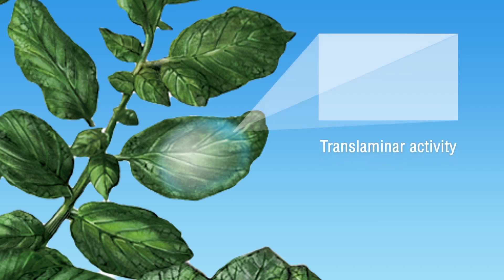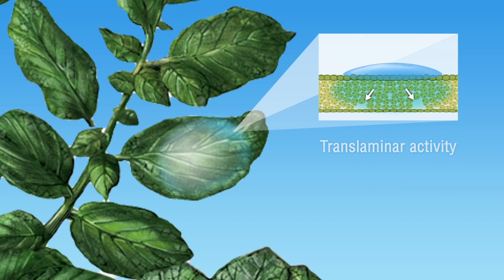Its trans-laminar activity ensures that the lower side of the leaf is protected as well. Mycelium growth is inhibited inside the leaf and sporangia formation prevented on the lower side of the leaf.